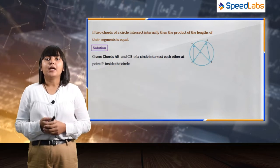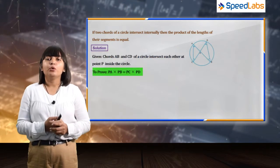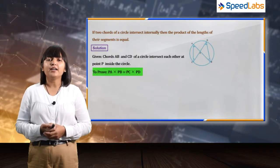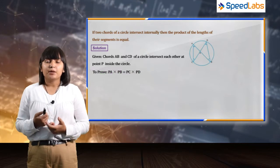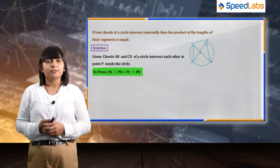We are supposed to prove that PA into PB is equal to PC into PD. In order to prove that, we must know a theorem which says that a chord subtends equal angles at the surface of the circle.